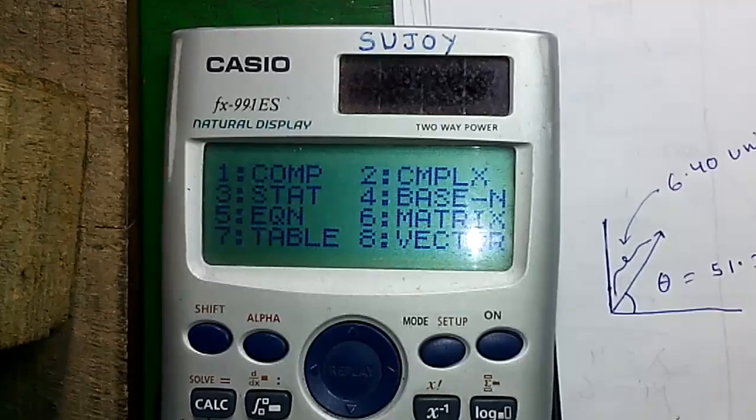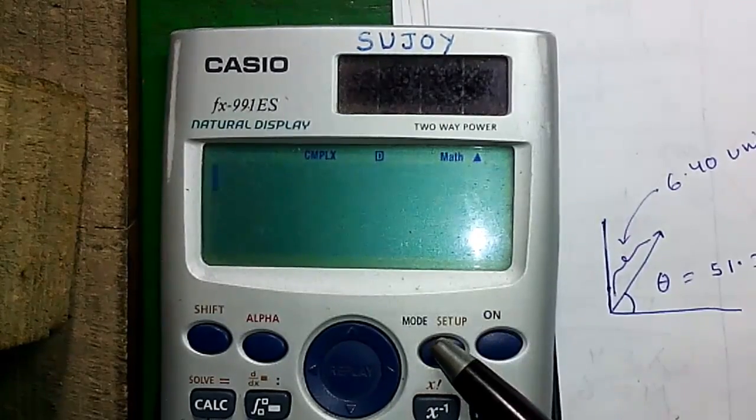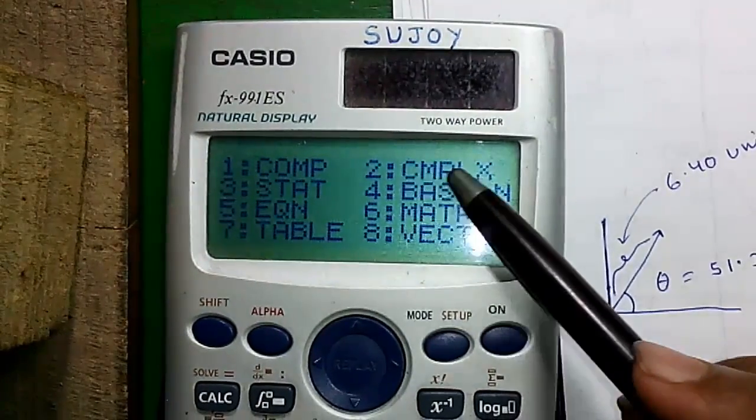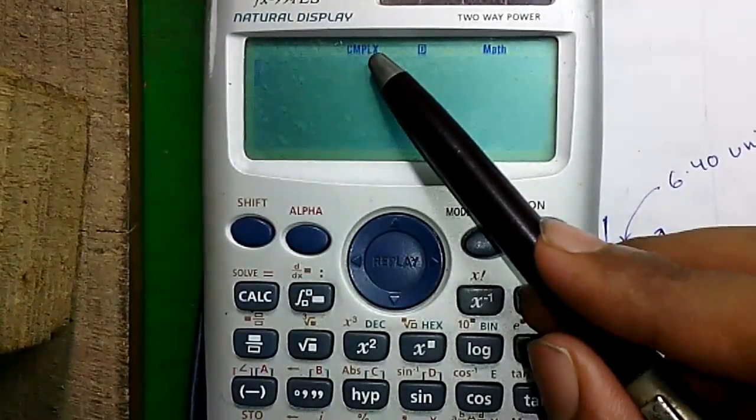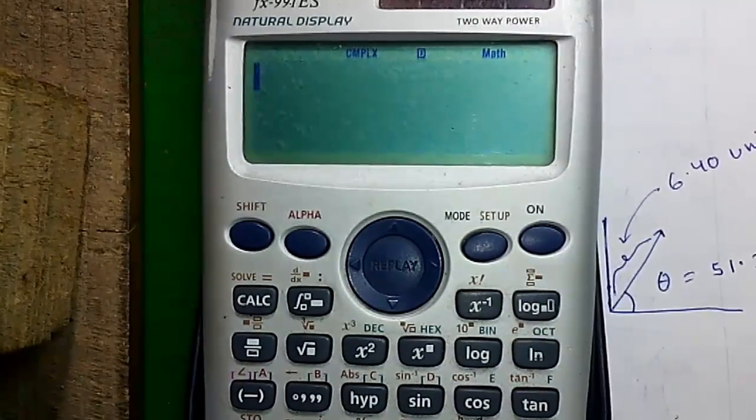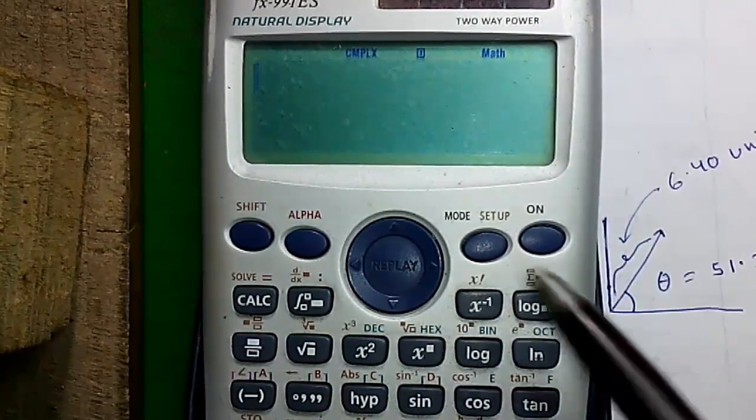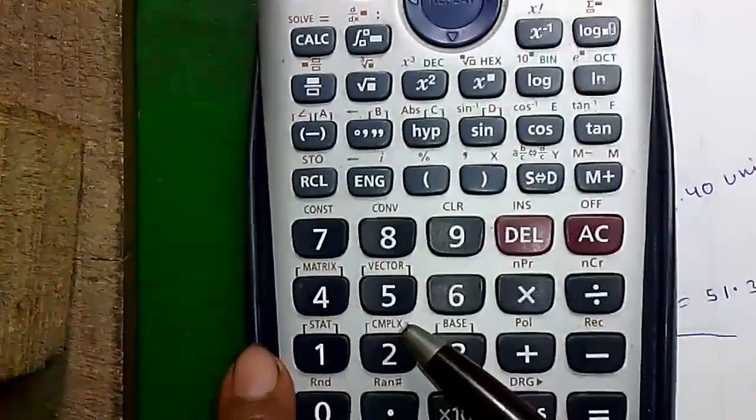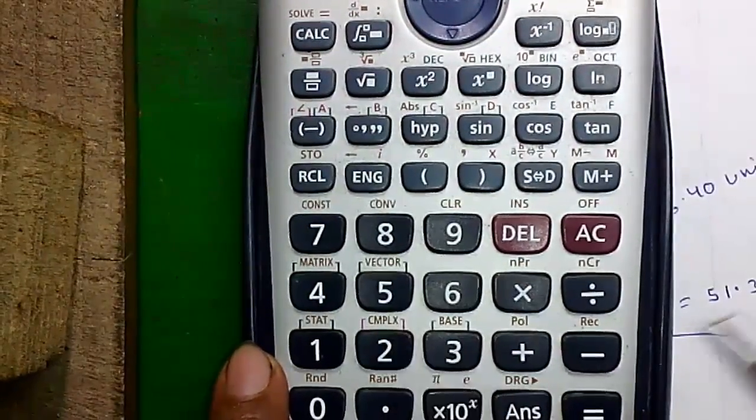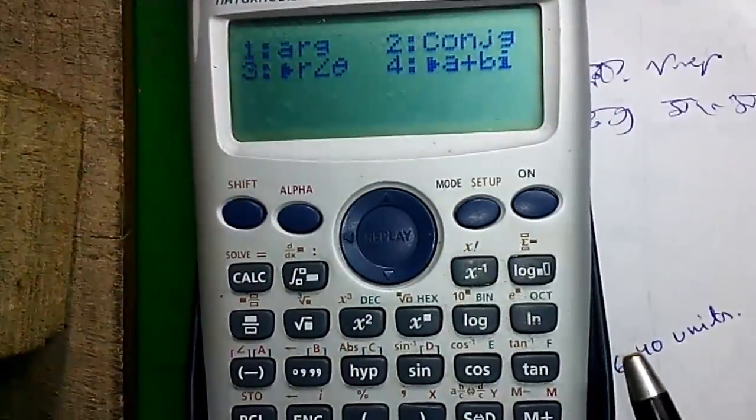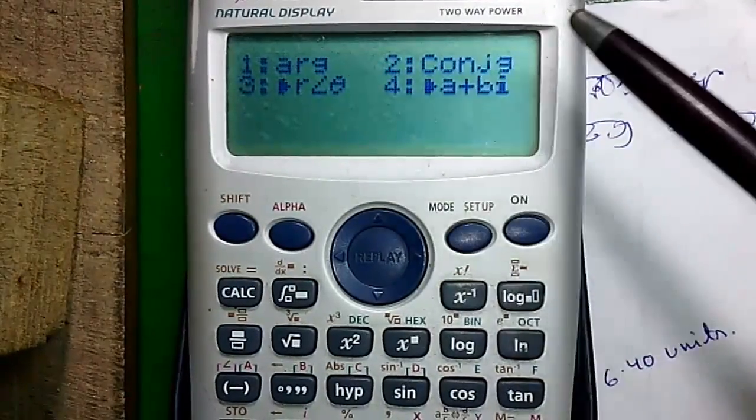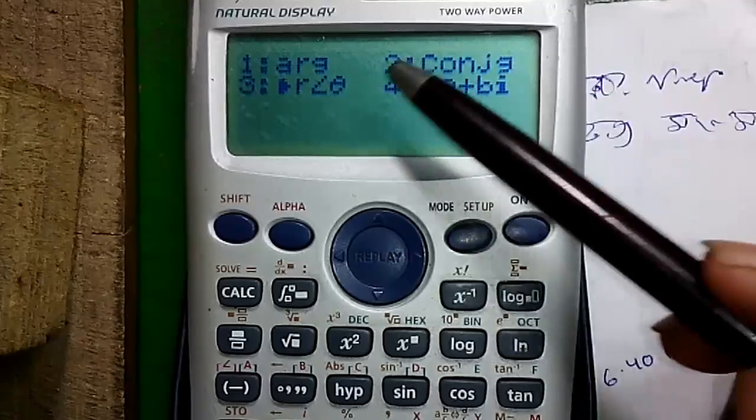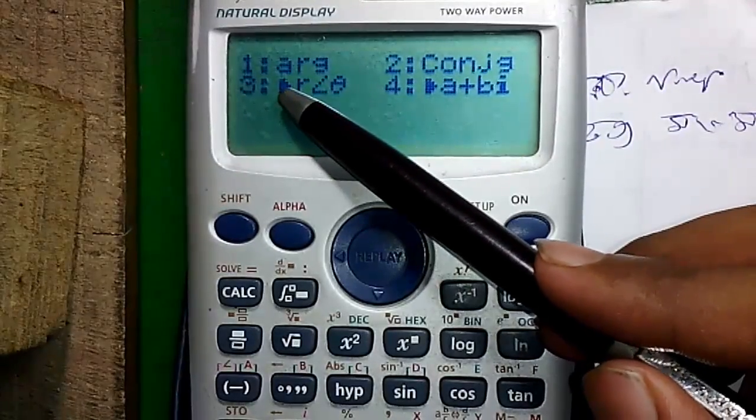To get into complex mode, press this mode button and 2. You can see complex written here. To get the complex submenu, press shift and again 2 where complex is written. Here are four options: number 1 is the argument mode, number 2 is the conjugate of a complex number, number 3 is rectangular to polar conversion, and number 4 is polar to rectangular conversion. I will explain all the features to you.